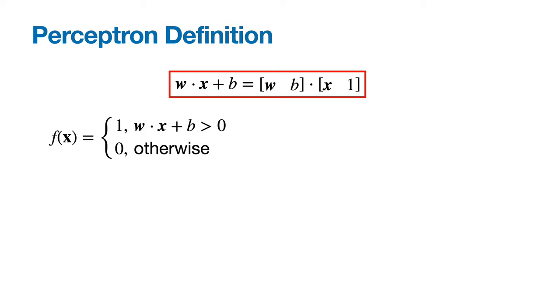Recognize that w dot x plus b is the same thing as the vector w with b appended to the end of it, dotted with the vector x with 1 appended to the end of it.